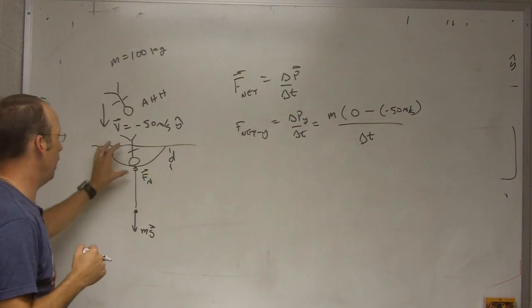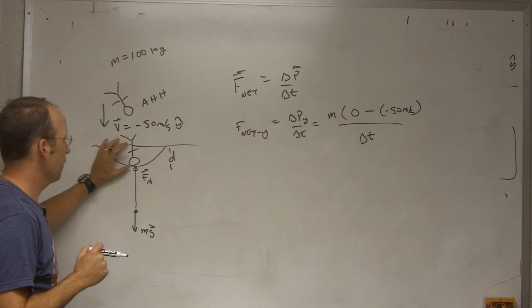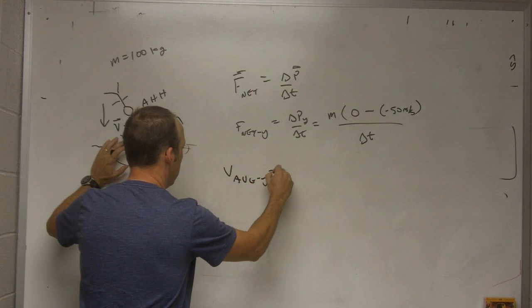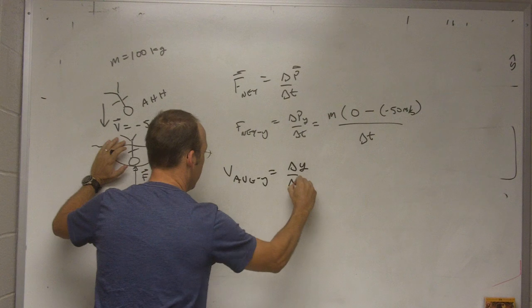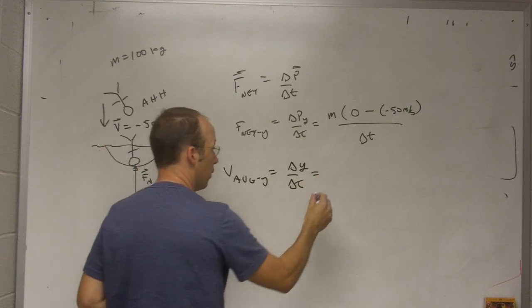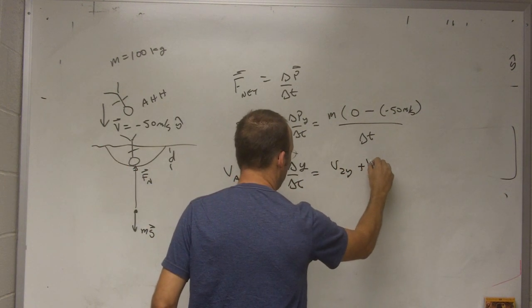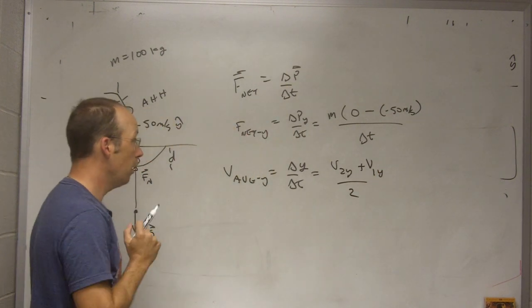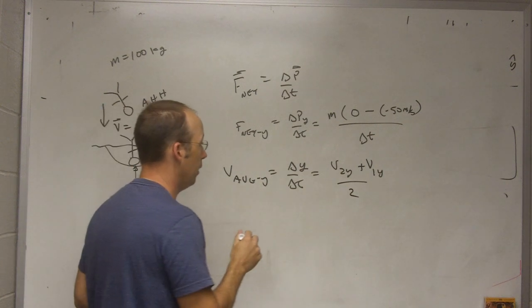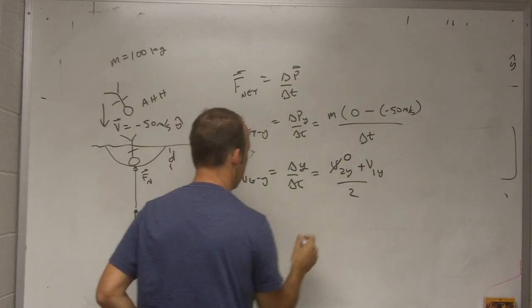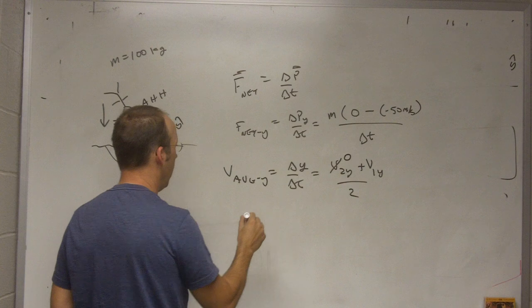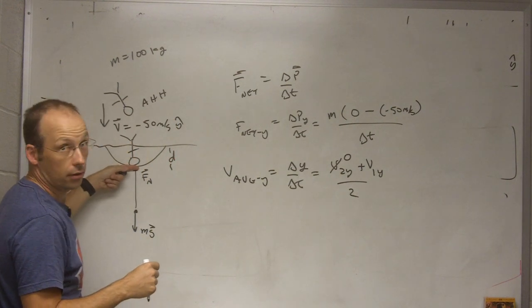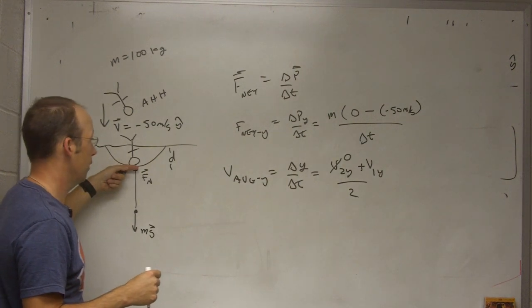So here again if I assume that it is a constant force I could say V average y over delta T, and that is also equal to V2y plus V1y over 2. So I can use this to get delta T. So my final velocity is zero. So in my delta y it goes from let's call this y equals zero to here a negative D.